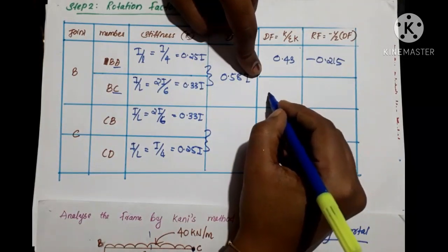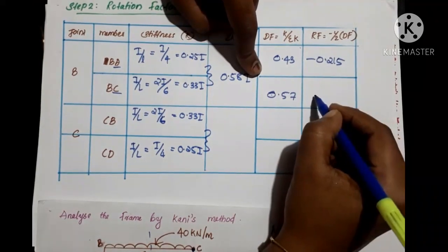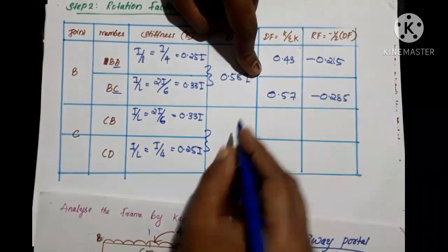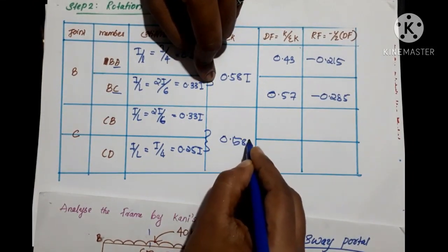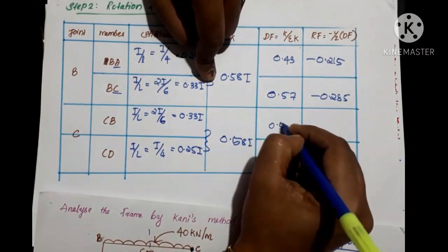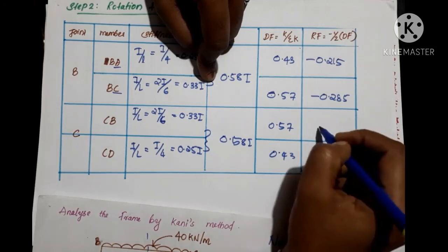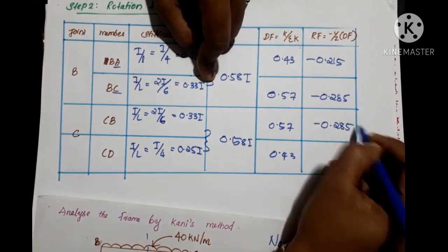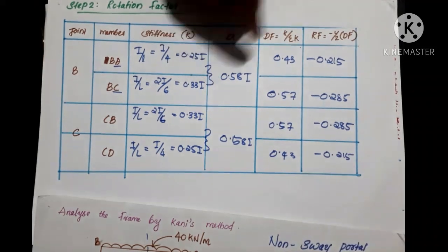The distribution factor: 0.43 divided by sigma-k, multiplied by minus 1/2 gives minus 0.215. And 0.57 divided by sigma-k, multiplied by minus 1/2 gives minus 0.285. These rotation factors apply symmetrically — 0.57 and 0.43, giving minus 0.285 and minus 0.215.